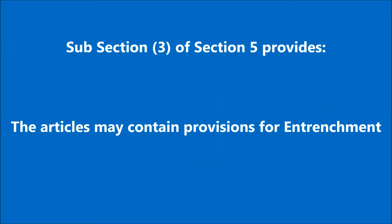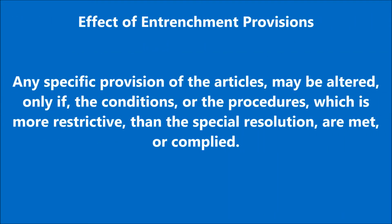Subsection 3 of Section 5 of the Act provides that the articles of any company may contain provisions for entrenchment. The effect of those entrenchment provisions in the articles would be that any specific provision of the articles may be altered only if the conditions or procedures which are more restrictive than the special resolution are met or complied with.